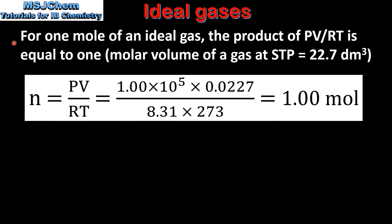For one mole of an ideal gas, the product of PV divided by RT is equal to 1. The equation is: amount in moles of an ideal gas equals PV divided by RT. If we substitute in the pressure and temperature at STP we get a value of 1.00 moles, showing that for an ideal gas the product of PV divided by RT is equal to 1.